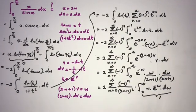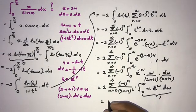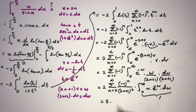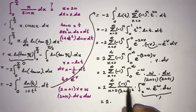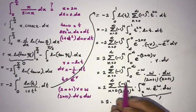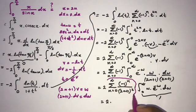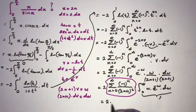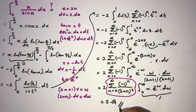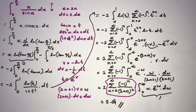The sum from n = 0 to infinity of (−1)^n over (2n+1)² is the well-known Catalan's constant G. Therefore the final answer is 2 times G, i.e., 2G. If you like my videos, please subscribe to this channel. Thank you for watching.